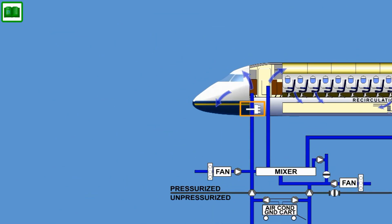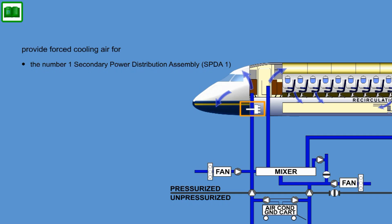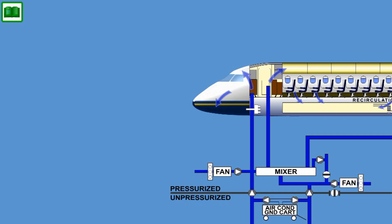The forward ebay ventilation system has three fans, which provide forced cooling air for the No. 1 Secondary Power Distribution Assembly (SPDA-1), Emergency Integrated Center (EICC), and all other avionics located in this ebay. The fans draw air from the cockpit and expel air toward the underfloor recirculation bay. A flow sensor is used for fan flow health monitoring.